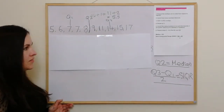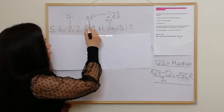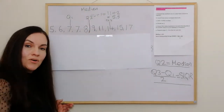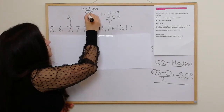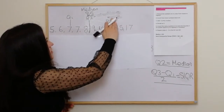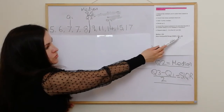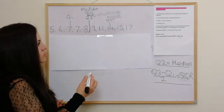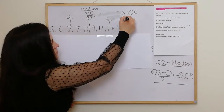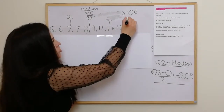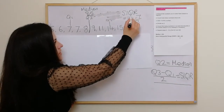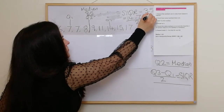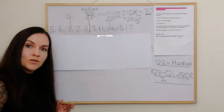So we've got the key bits of information. Our median is Q2, which is halfway between 8 and 9, so the median is 8.5. To get our semi-interquartile range, we do Q3 minus Q1 divided by 2. Q3 is 14 and Q1 is 7, so we do 14 minus 7 divided by 2. The top becomes 7, and 7 divided by 2 is 3.5. So the median was 8.5 and the semi-interquartile range is 3.5.